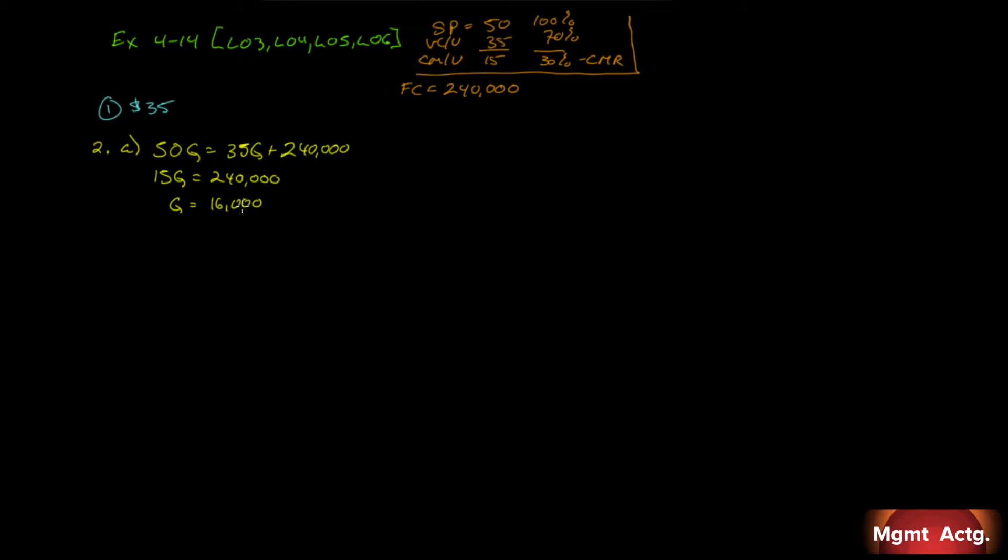Now we can just multiply 16,000 by our 50 bucks to get 800,000. Or we can do it using X equals the sales, using this row instead of this row. So by using this row, we would have X equals .7X plus 240,000. We have .3X equal to 240,000, and X would equal 800,000. If you took 16,000 by 50, you'd get the same 800,000. There's A done.